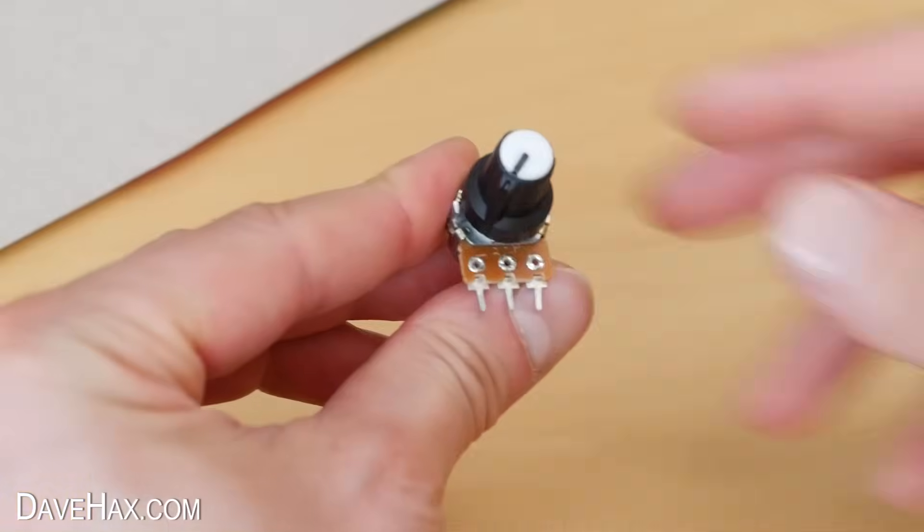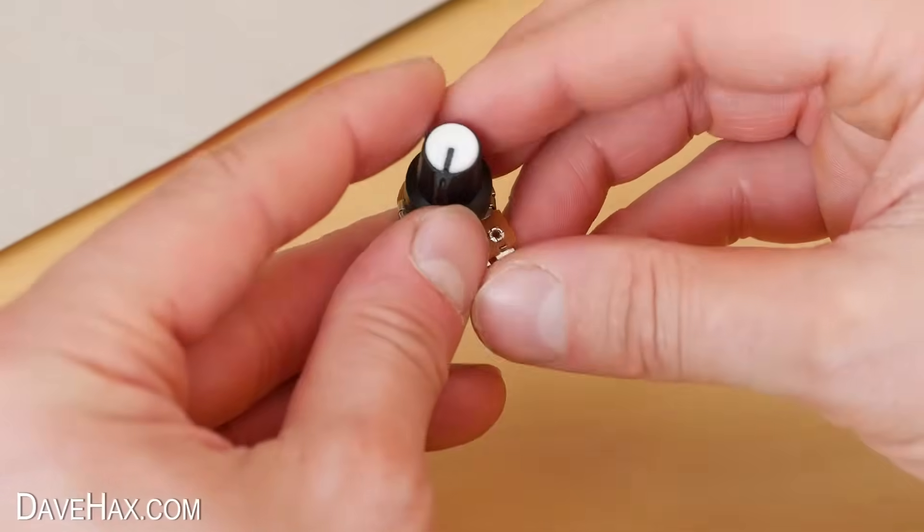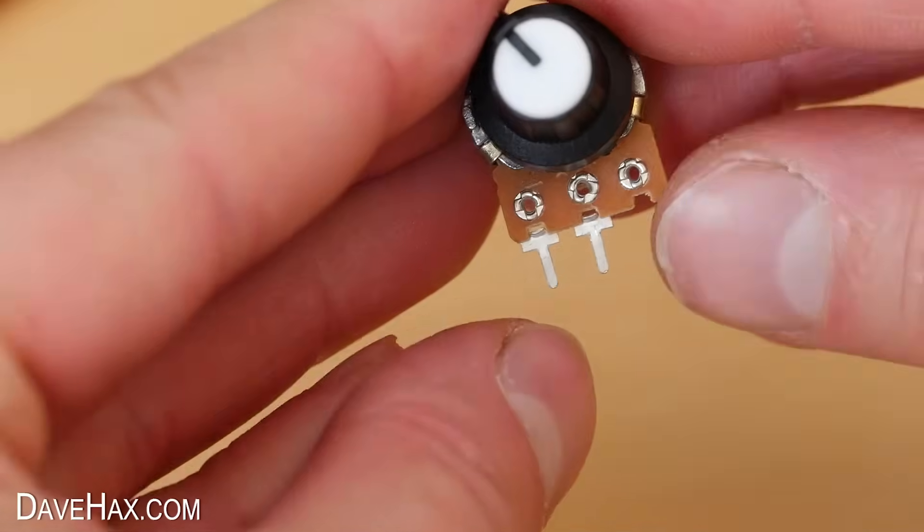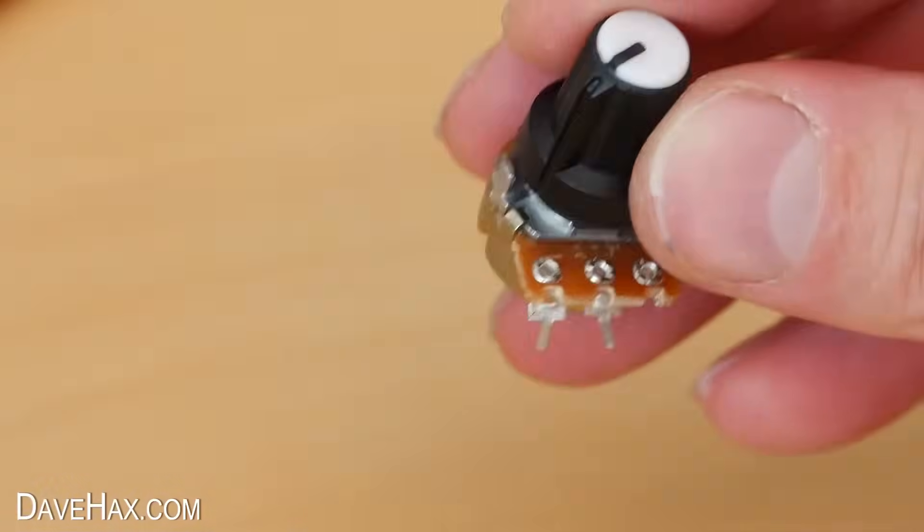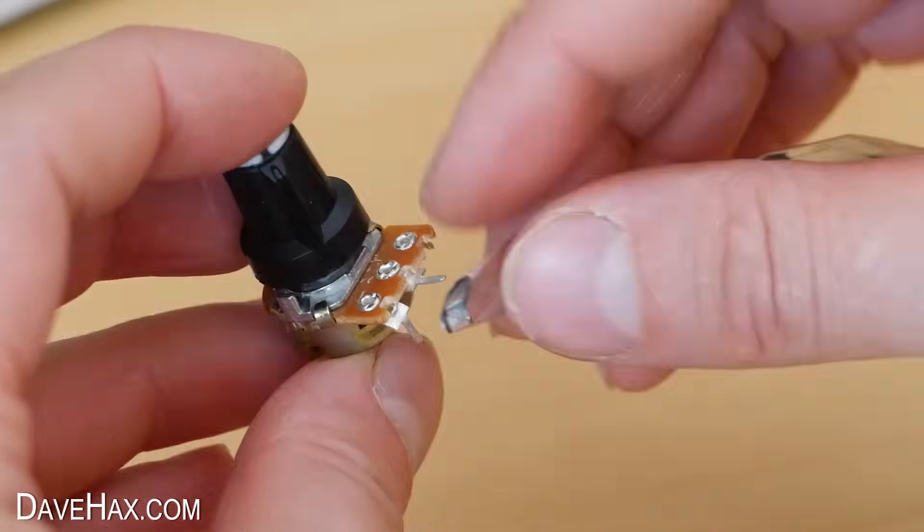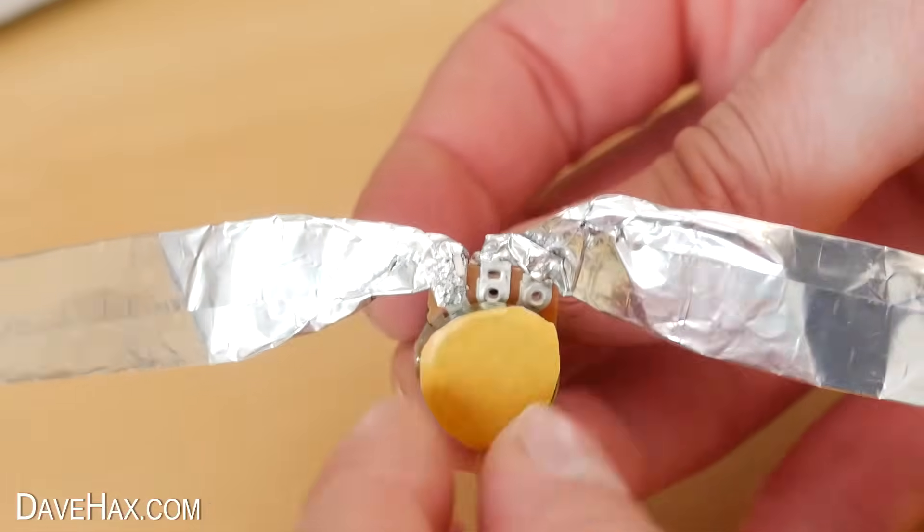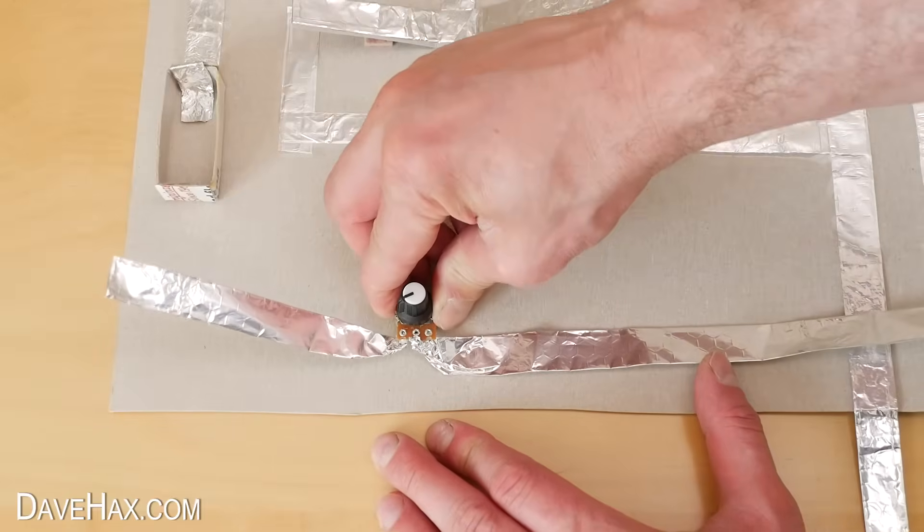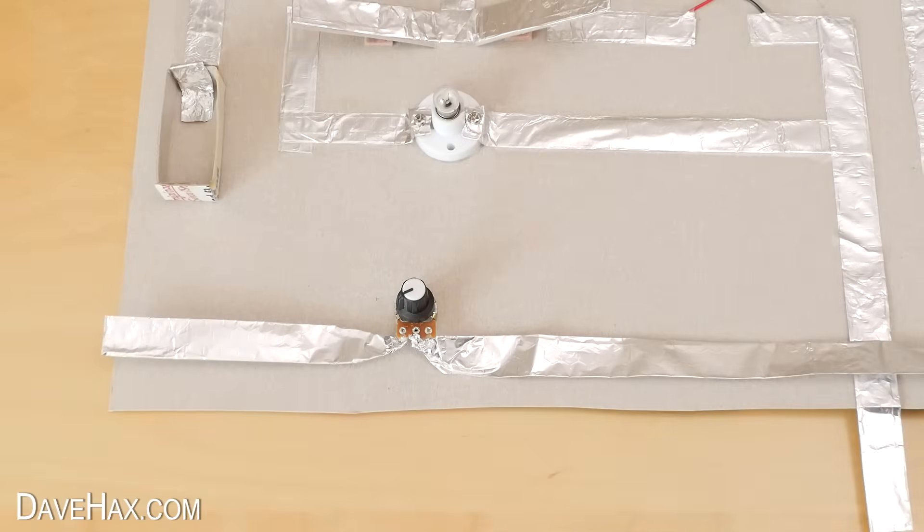And finally we're going to use this as a variable resistor along the bottom of the circuit board. We won't need this third pin so I'm removing it with a set of pliers. I'm bending over one of the pins and attaching the foil in a similar way to how we did previously. I also added some double-sided tape so I can fix it to the board. Placing it here will allow us to increase the resistance in the entire circuit and affect any one of the other components.